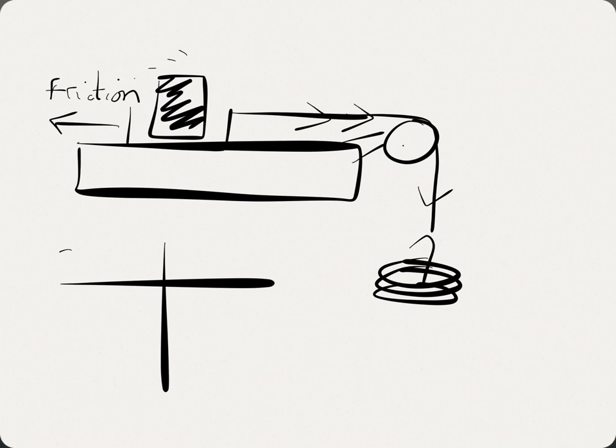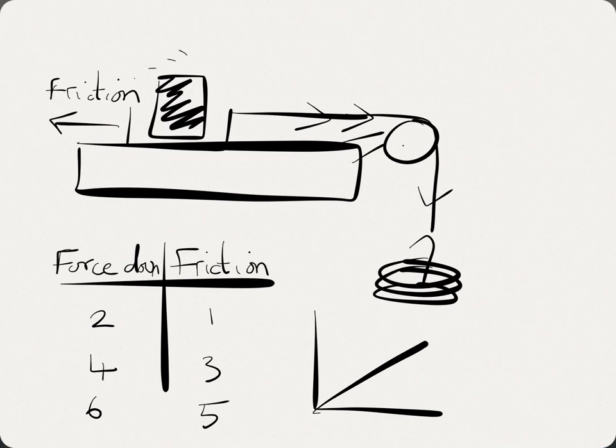What we discovered was, if we did force down, so if we added different amounts, force down. So we went 2 newtons, 4 newtons, 6 newtons. If we measured the friction, then what we saw is it went up. And if we were counting the slotted masses, it might go 1, 3, 5. They went up nice and steadily.